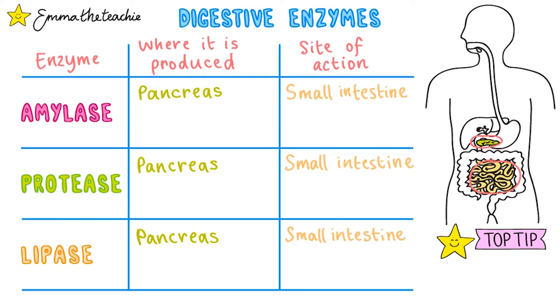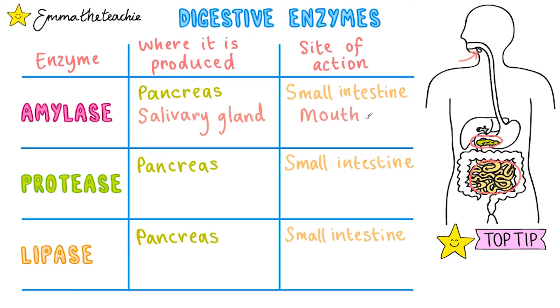But they do also get produced in other places. Amylase, for example, also gets produced in the salivary glands. It's then no surprise that the site of action is the mouth, as that's where the salivary glands are located.